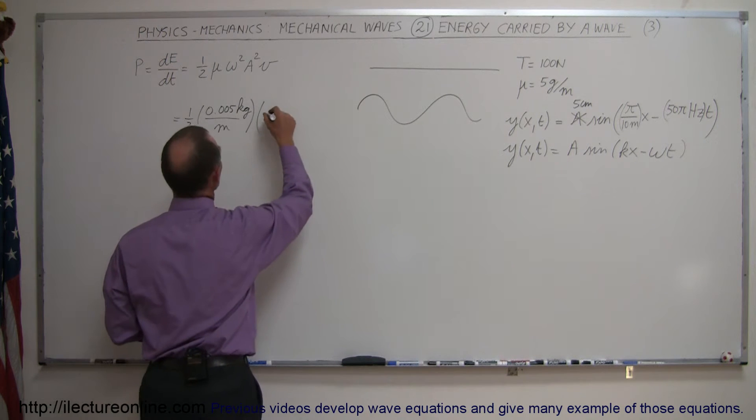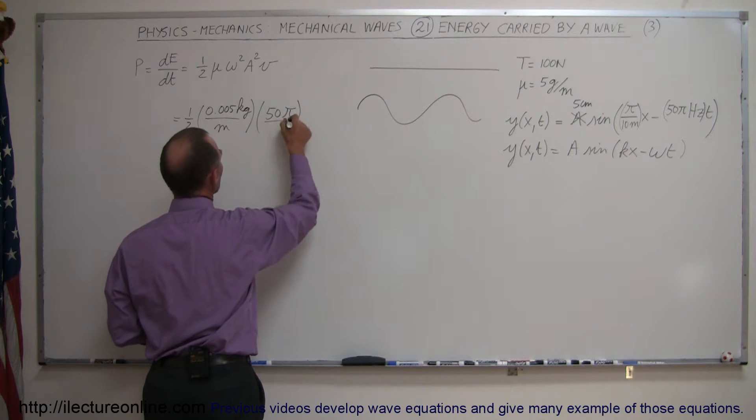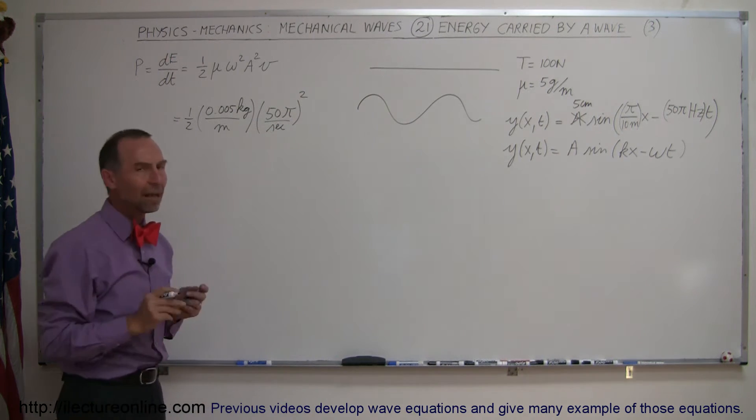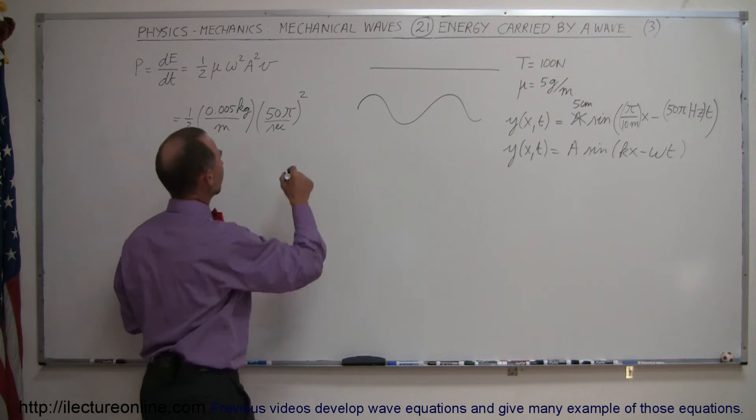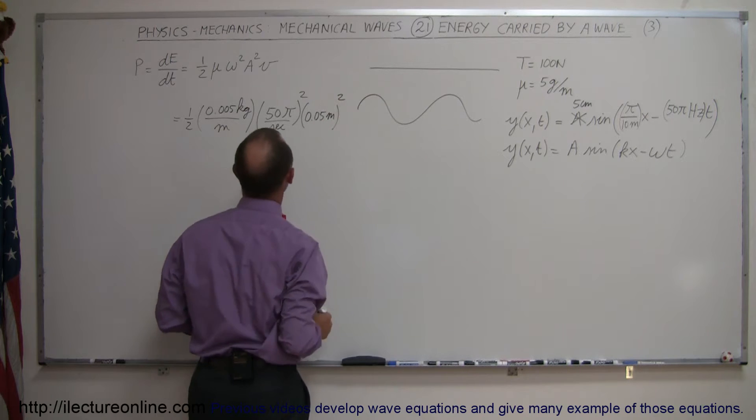So we can plug that in here. That would be 50 times pi hertz. That would be per seconds. And we want to square that. So that's good. Now the amplitude. We set 5 centimeters, convert to meters. That would be 0.05 meters. And we have to square that.